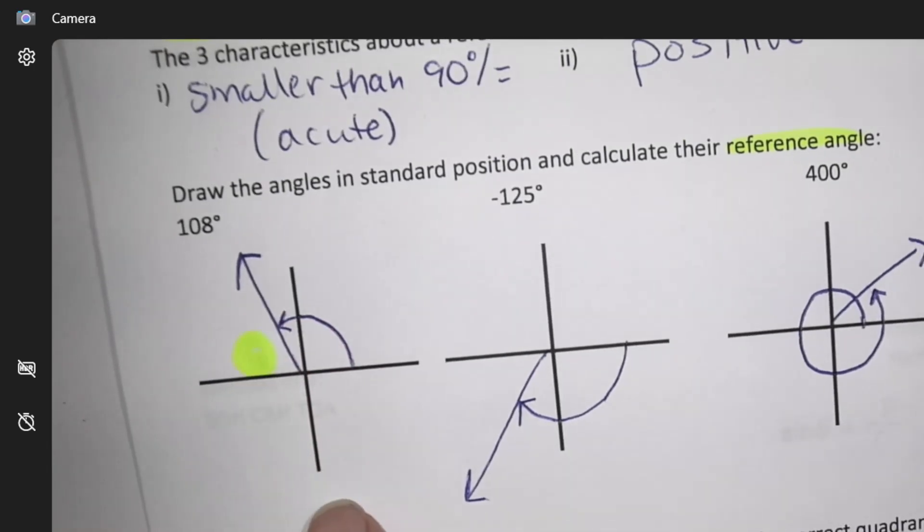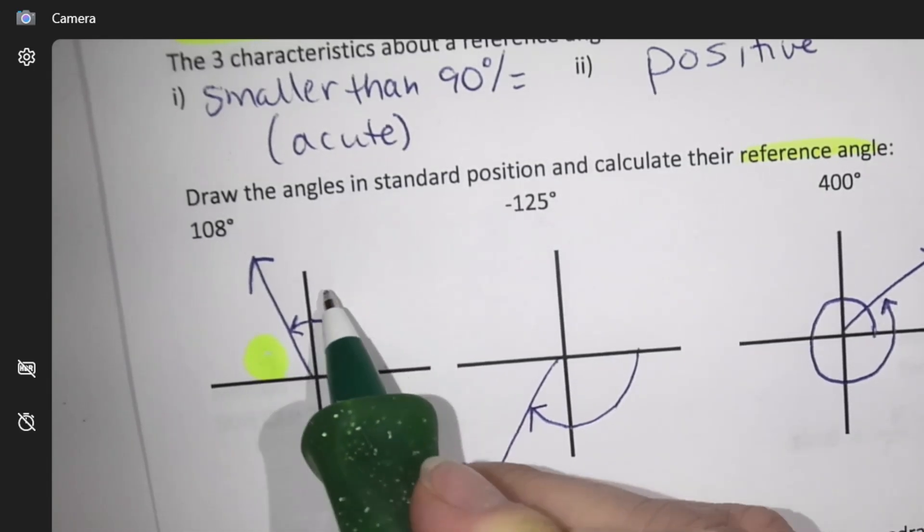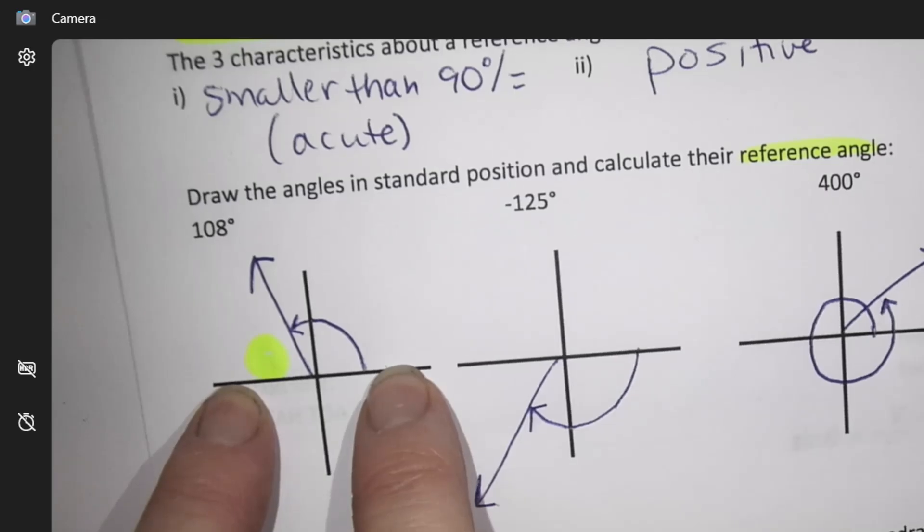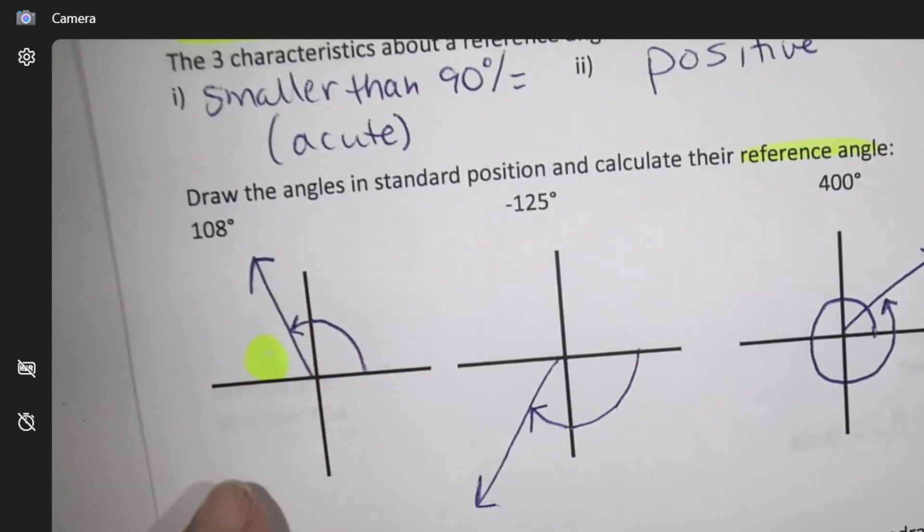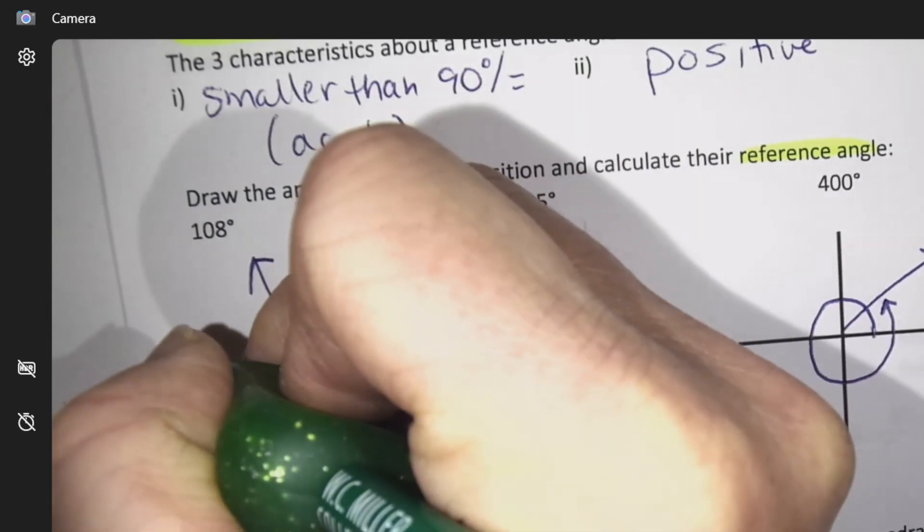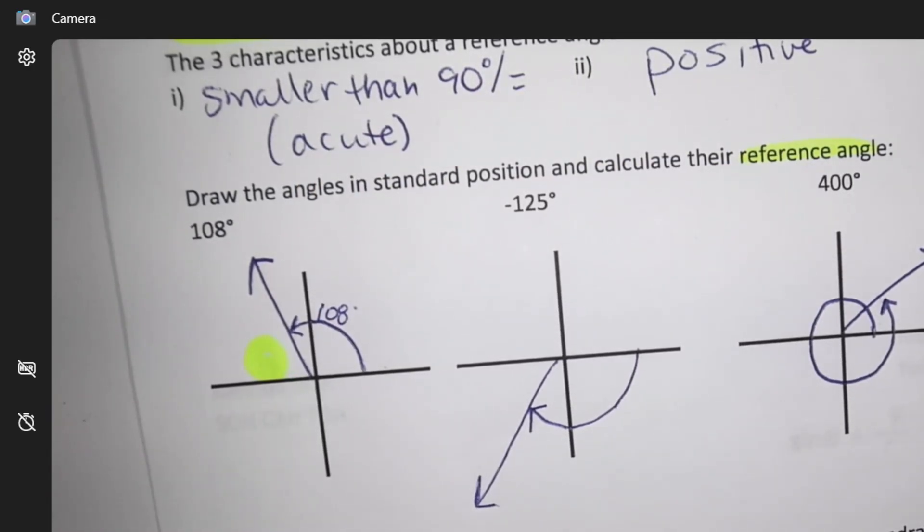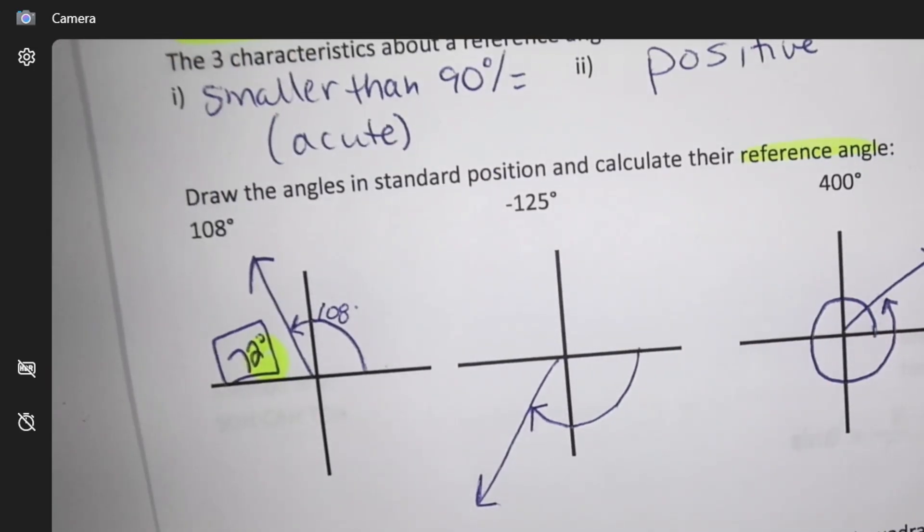It is 72. How did you get that? If the whole space from here to here is 180 minus the 108, this is 108 and this is all 180. We can minus them. So the reference angle is 72 degrees.